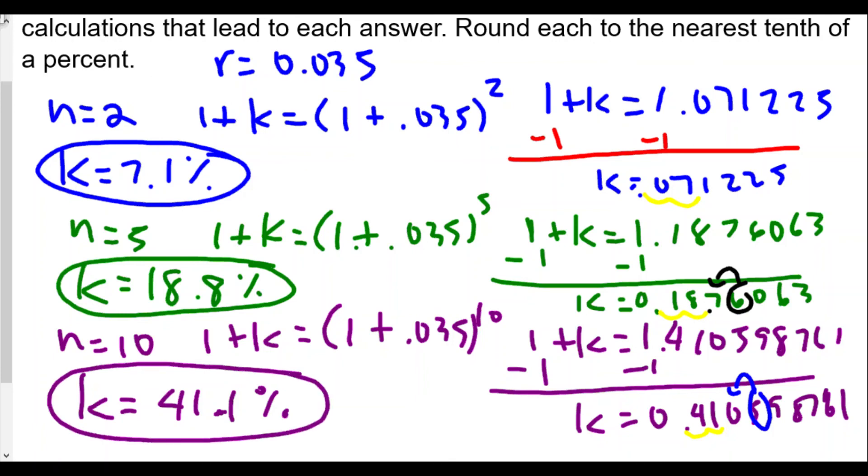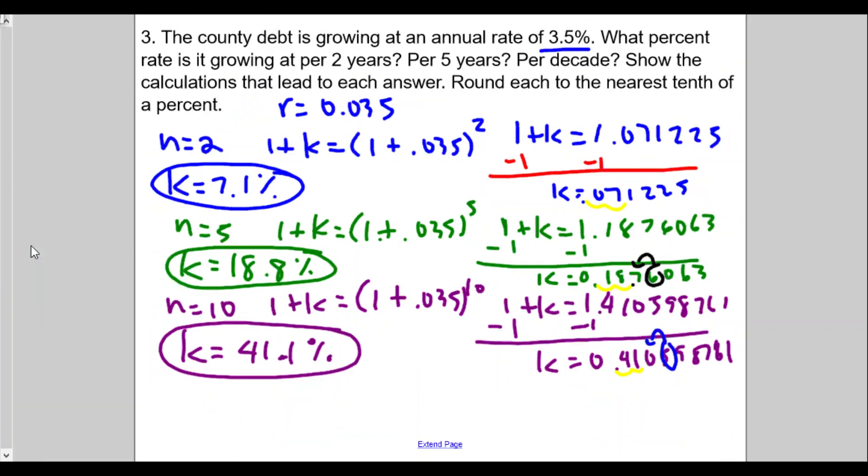And this is how we find the total growth rate, using our formula here. And what's nice in this case, using a graphing calculator, just make slight adjustments. So we see here how the annual rate is 3.5%. We see how the total change will be over those three different times: two years, five years, and a decade, which is 10 years.